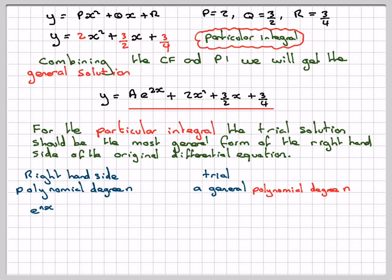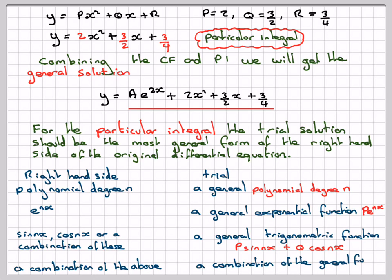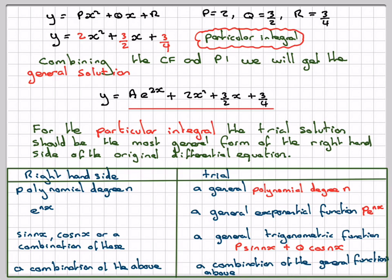If we've got e to the nx, then we need the general exponential function p e to the nx. If we've got sin nx, cos nx or a combination of these, then the most general form of a trigonometric function will be p sin nx plus q cos nx. And a combination of the above will be a combination of the general function of the above.